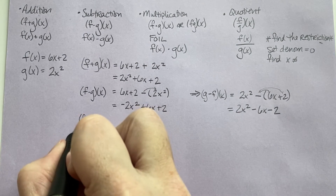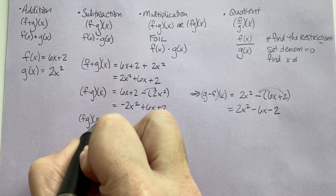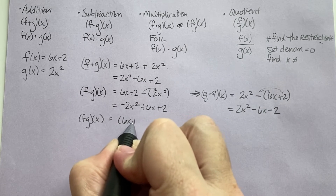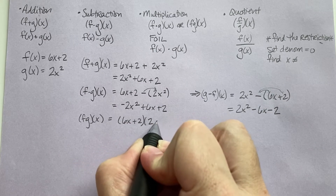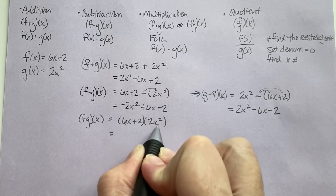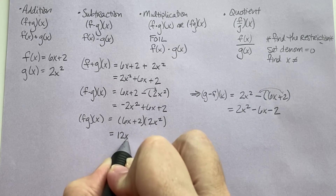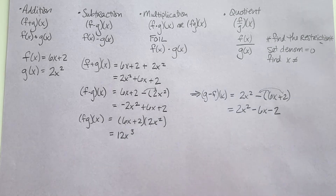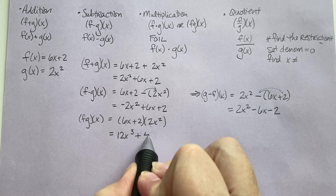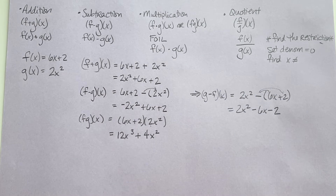Now for multiplication. We have (6x plus 2) times 2x squared. 6x times 2x squared gives us 12x cubed. 2 times 2x squared gives us 4x squared. That's it.